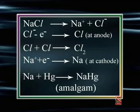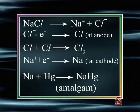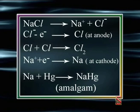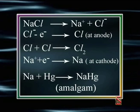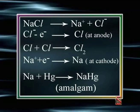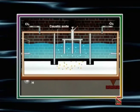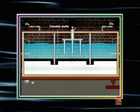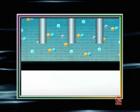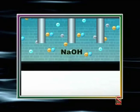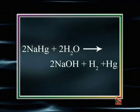At the cathode, sodium ions are reduced to sodium metal: Na⁺ + e⁻ → Na. The sodium metal liberated at the mercury cathode in the outer compartment forms an amalgam with mercury: Na + Hg → NaHg, which is sodium amalgam. The sodium amalgam moves into the middle compartment due to the rocking motion, where it reacts with water to form sodium hydroxide: 2NaHg + 2H₂O → 2NaOH + H₂ + Hg.